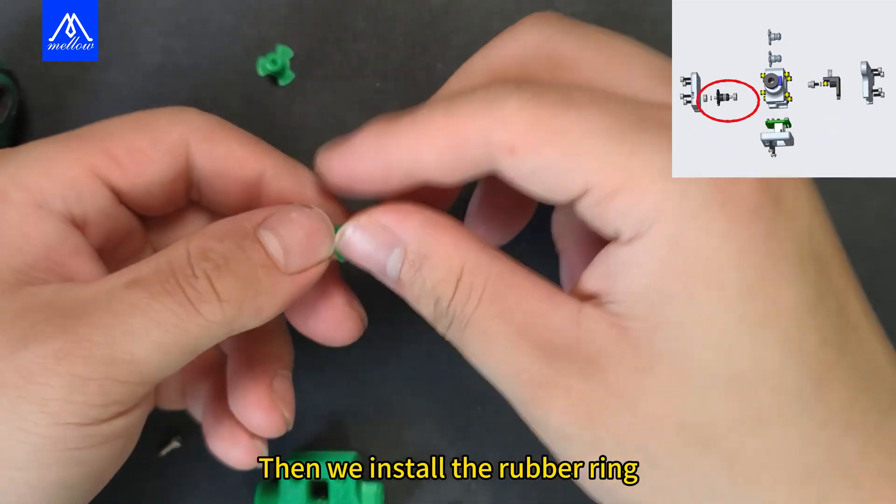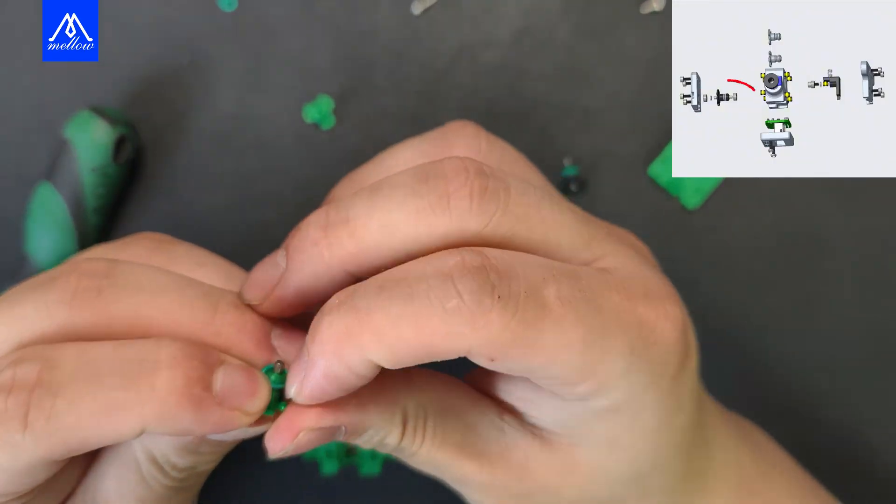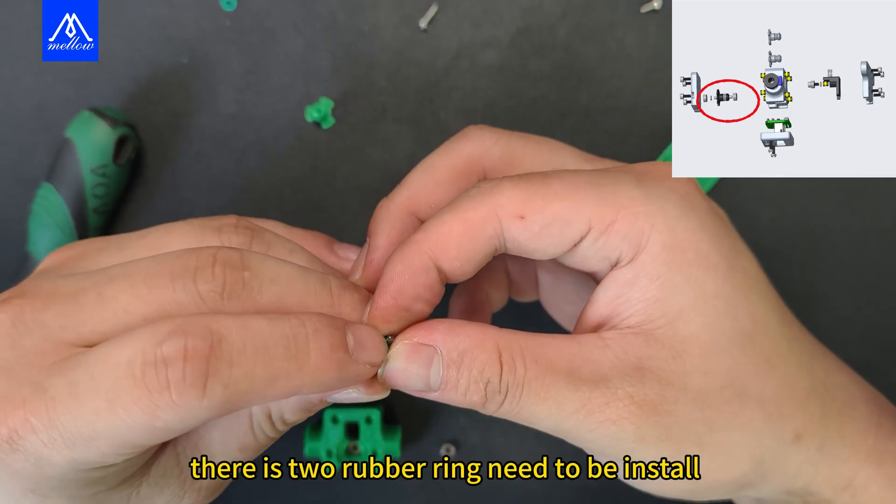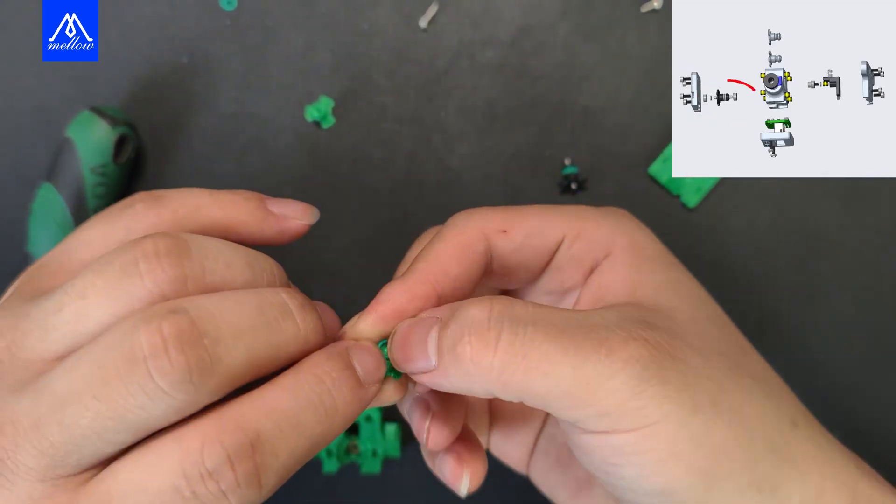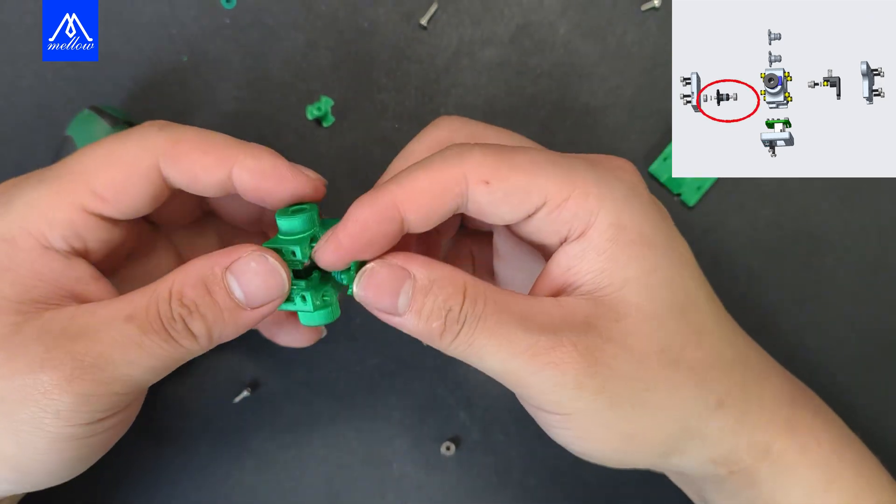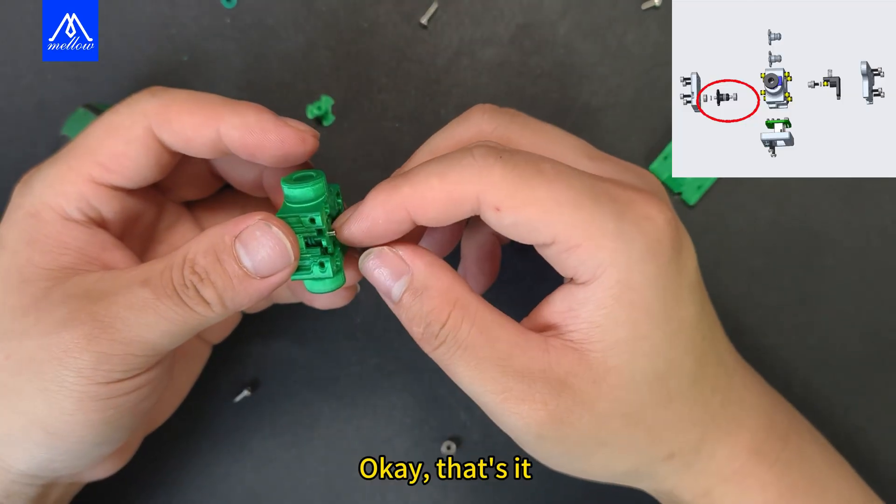Then we install the rubber ring. There are two rubber rings that need to be installed. That's it.